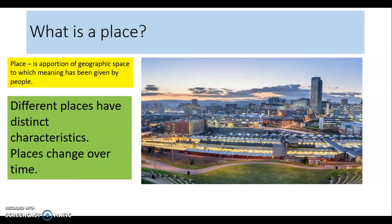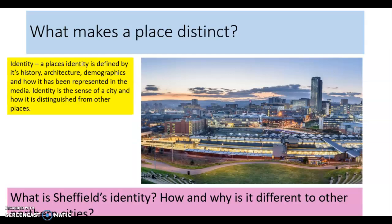Different places have different characteristics and they change over time too. Thinking back to that very first lesson, I will have got you to think about the characteristics that define places - perhaps doing this as a spider diagram on the board. A place could be defined by its demographics: its population size and structure. It could be defined by its socio-economic characteristics, for example employment and education opportunities, income, health, and crime rates.